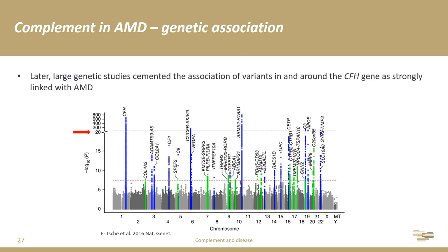If you pay attention to the axis in that Manhattan plot, it is not linear — the reason being that if it were, two particular risk loci would dwarf the rest of the signal: one on chromosome 1 and one on chromosome 10. For the purposes of this talk, the focus is on chromosome 1, which resides in and around the gene for complement factor H.